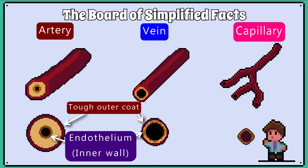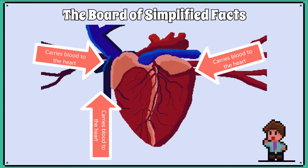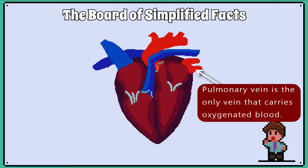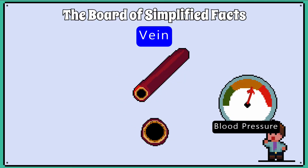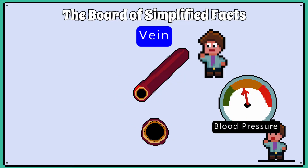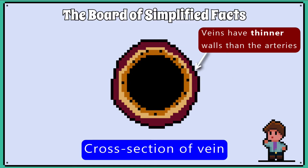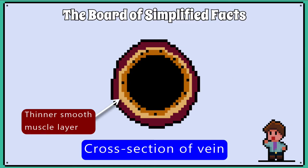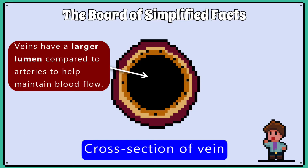Veins share many of the same features as the artery but with some key differences. They carry blood back to the heart, and except for the pulmonary vein, it is always deoxygenated. In general, veins contain blood that is at a lower pressure and their structure reflects that. The wall thickness is thinner because the pressure is lower, the muscle layer is thinner compared to arteries, and the lumen is generally larger than what you see in arteries to help keep the blood flowing.